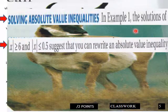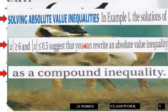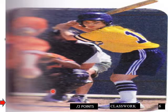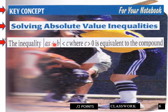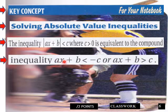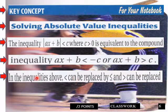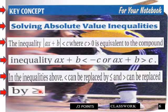From the solutions of |x| ≥ 6 and |x| ≤ 0.5, we see that you can rewrite an absolute value inequality as a compound inequality. Solving an absolute value inequality: |ax + b| less than c, where c is greater than 0, is equivalent to the compound inequality ax + b is greater than negative c and ax + b is less than c. In the inequalities above, less than can be replaced by less than or equal to, and greater than can be replaced by greater than or equal to.